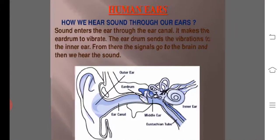How do we hear sound through our ears? Sound enters the ear through the ear canal. It makes the ear drum vibrate. The ear drum sends the vibrations to the inner ear. From there, the signals go to the brain and then we hear the sound.